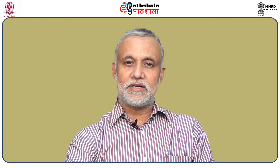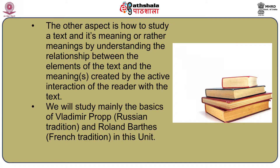Thinkers have studied two aspects. The first is the relationship between word and meaning — that is, sign, signifier, and signified — in various ways. The other aspect is how to study a text and its meaning, or rather meanings, by understanding the relationship between the elements of the text and the meanings created by the active interaction of the reader with the text. In this unit, we will study mainly the categories and methodology proposed by Vladimir Propp and Roland Barthes. Propp represents the Russian tradition and Barthes represents the French tradition.